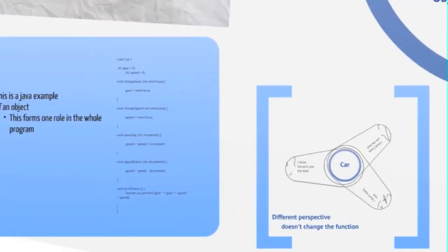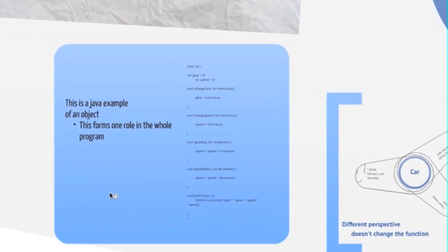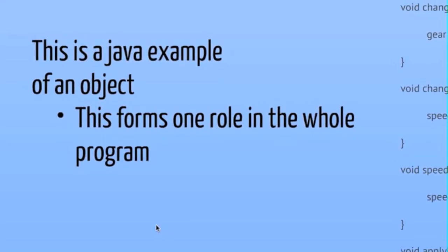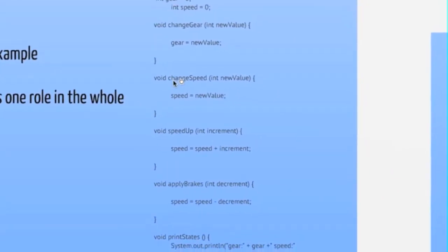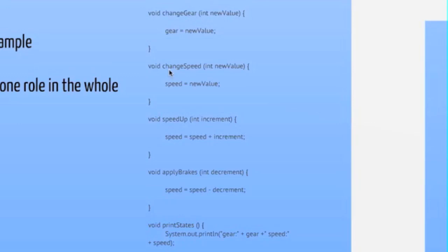I gave a Java example here. This only forms one object in a Java program. This forms one role in the whole program. I made an object here with the class car. This is about cars, but this is one object. What we want at the end is to see what the gear is and what the speed is. We declare at the beginning an integer gear equals zero and an integer speed. The syntax of Java probably looks new, but the design of this class is based on previous discussion of car objects.